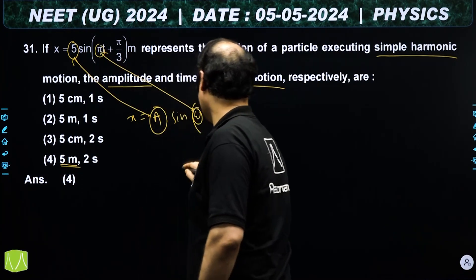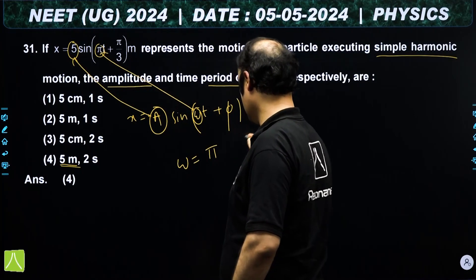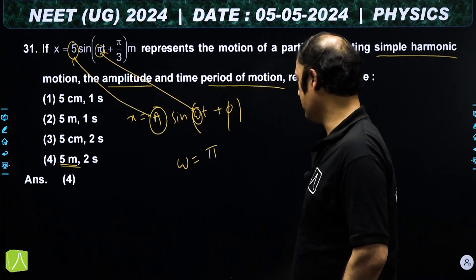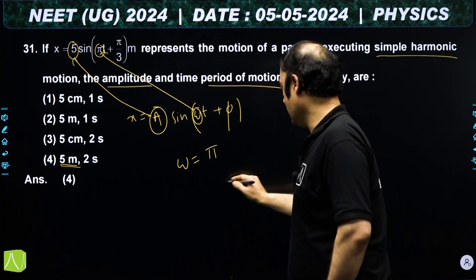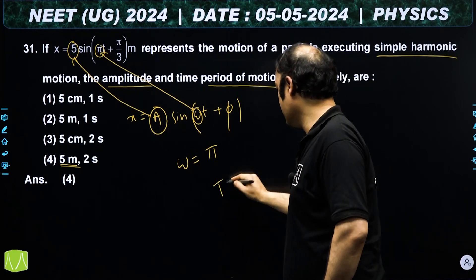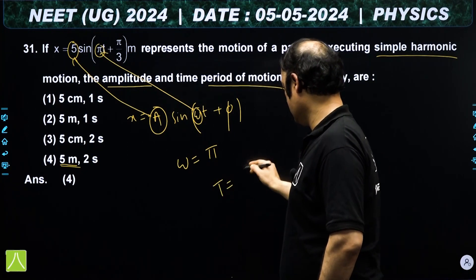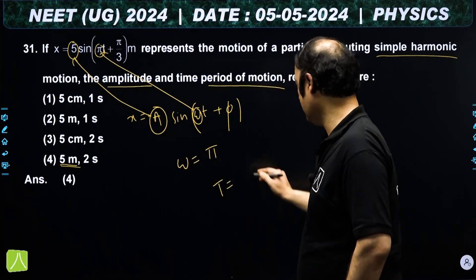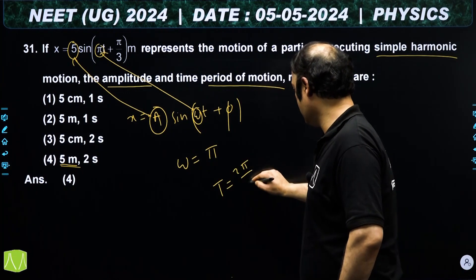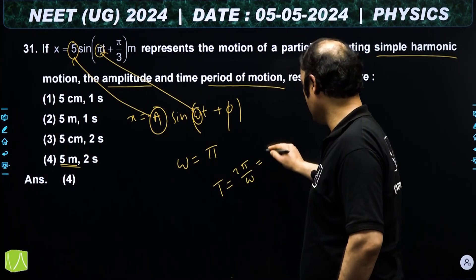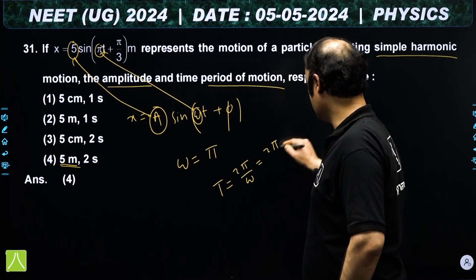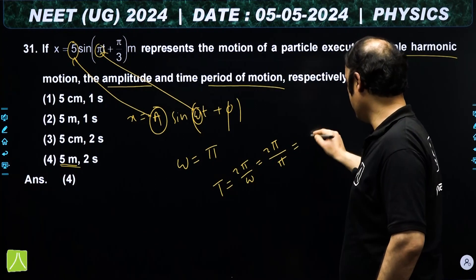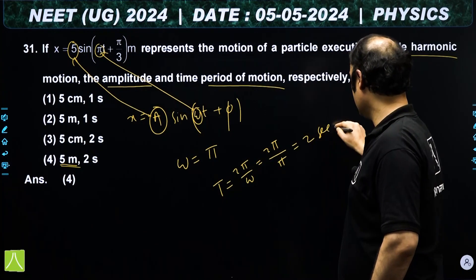Comparing the coefficient of t, we get ω = π radian per second. The time period T = 2π/ω = 2π/π = 2 seconds.